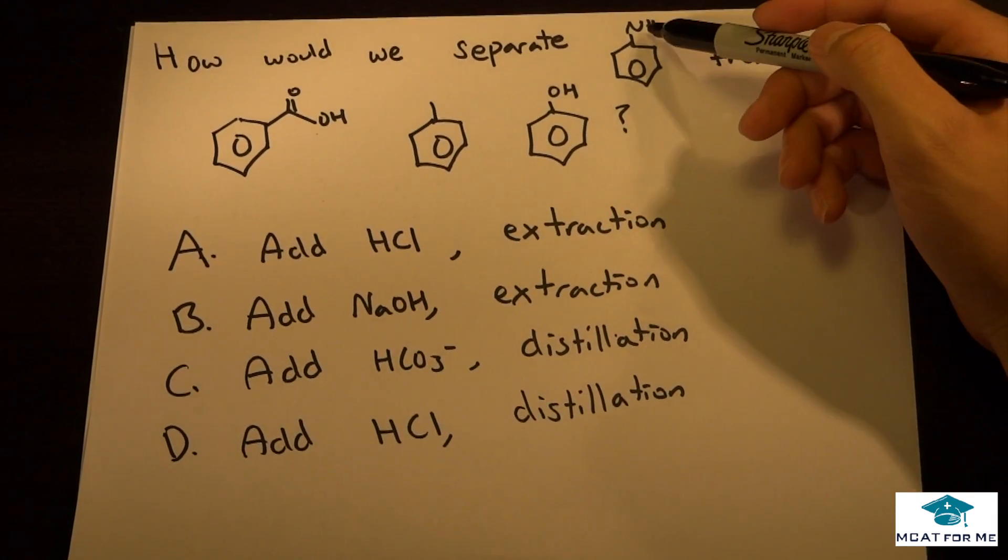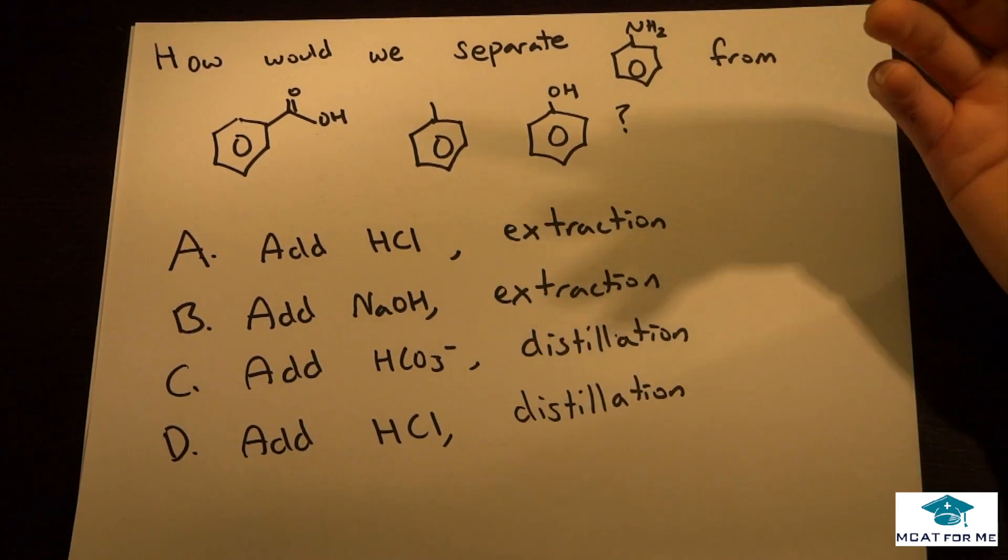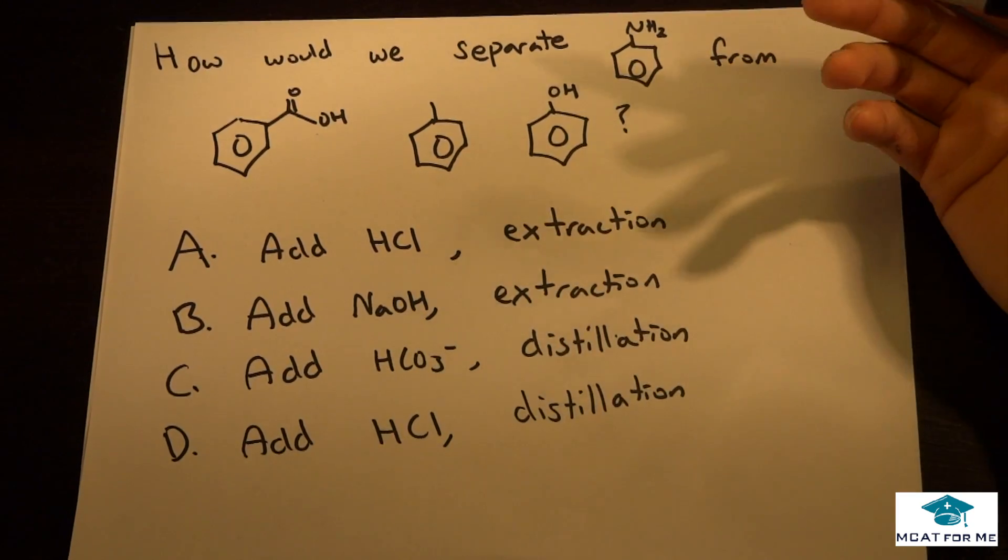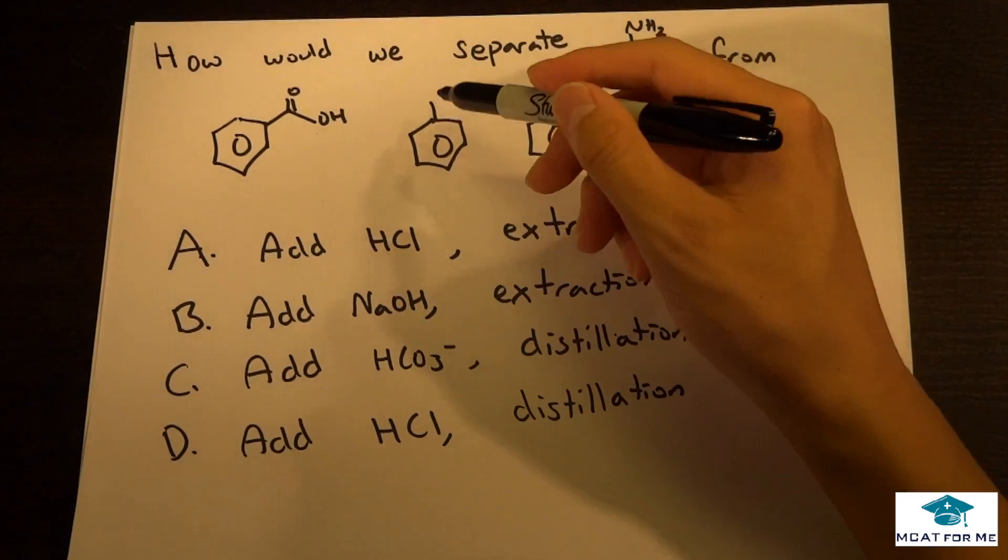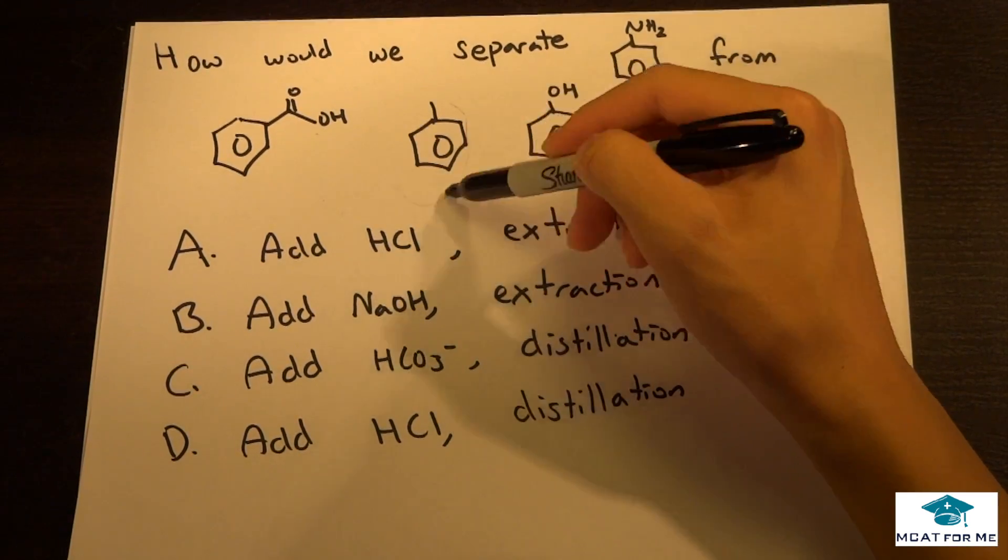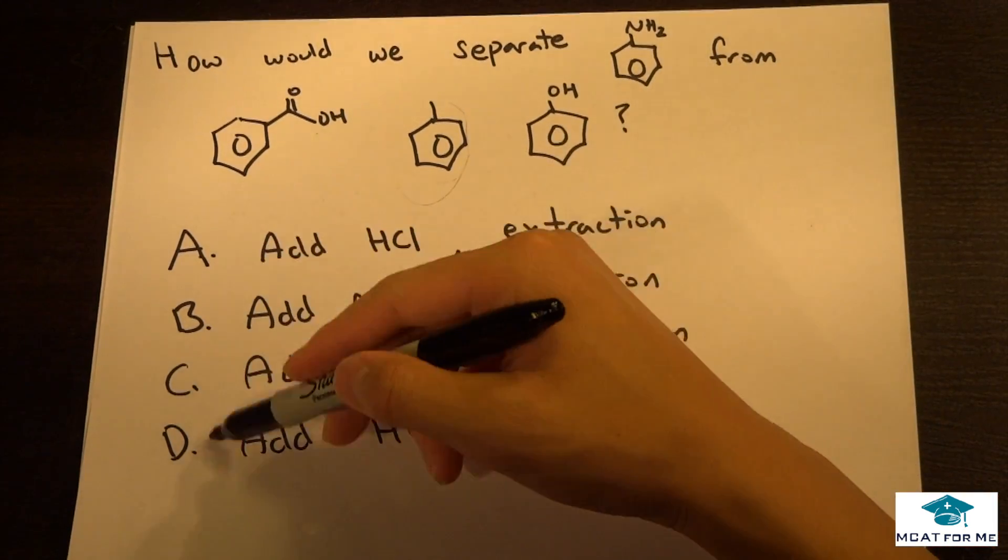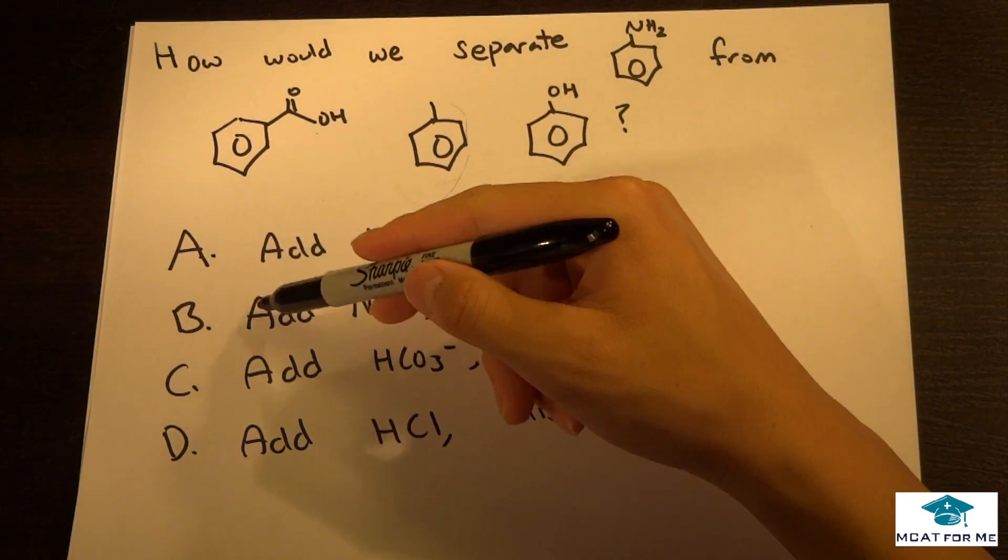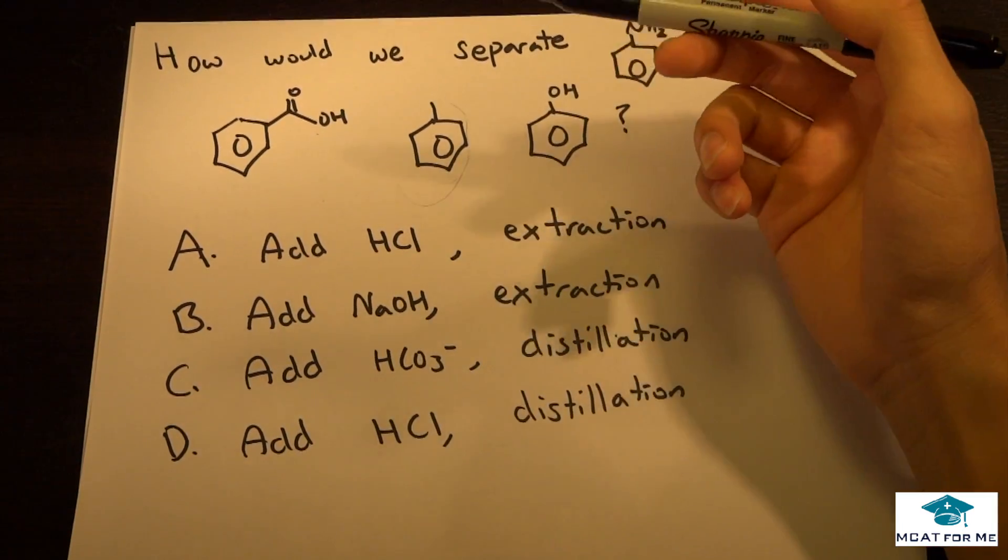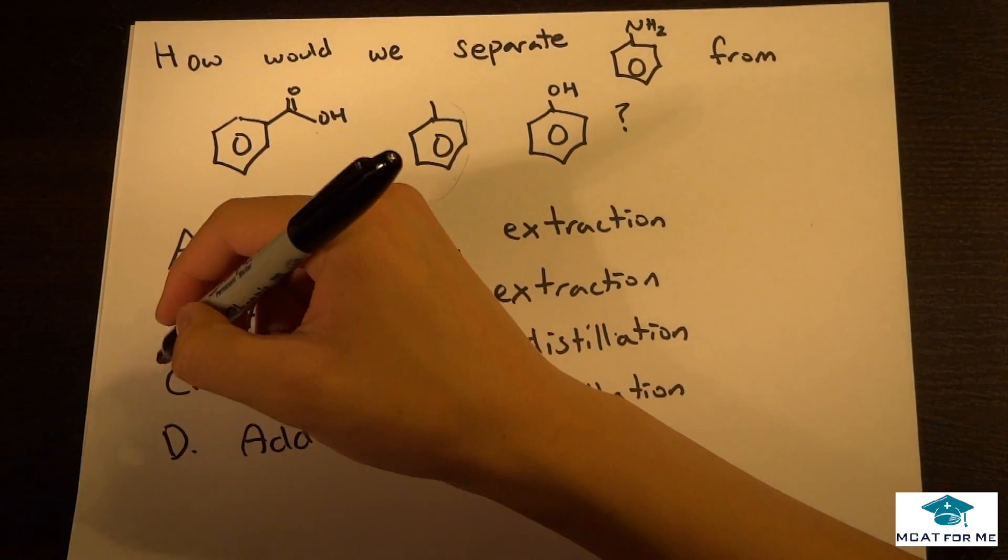But really what's very obvious to us is that there's a presence of an acid and there's a presence of bases and there's also a presence of something that's not an acid or a base. And if we look at all our answer choices, we're adding either an acid or a base. So we know that it's not going to be distillation.